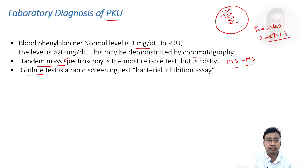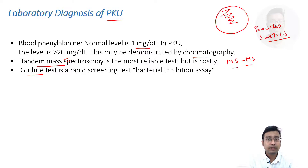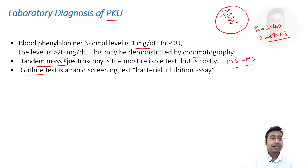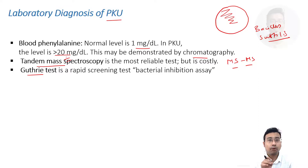Bacillus subtilis needs phenylalanine for growth. The media chosen in Guthrie's test is phenylalanine-depleted. If we normally inoculate Bacillus subtilis into this media, it will not grow. If we incubate it with normal serum that does not contain adequate phenylalanine, bacteria will not grow. However, when serum from a PKU patient is incubated with this culture media — containing more than 20 times the normal phenylalanine — it provides adequate nutrition for Bacillus subtilis and it will grow. If Guthrie's test is positive, Bacillus subtilis will grow and the patient has phenylketonuria.